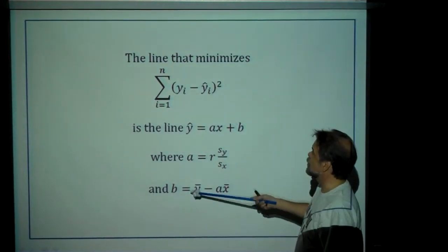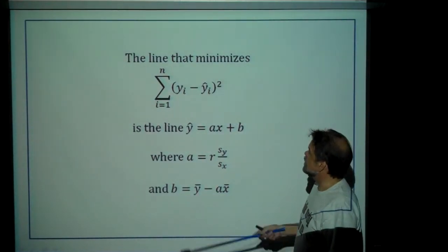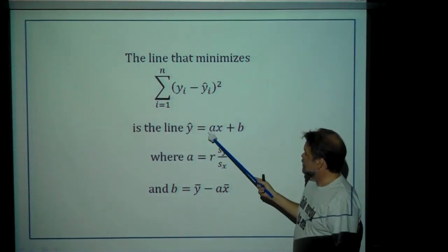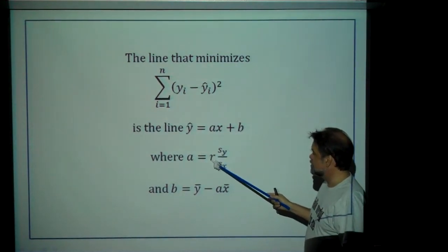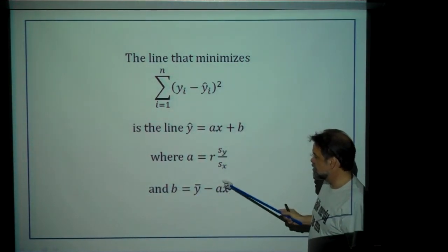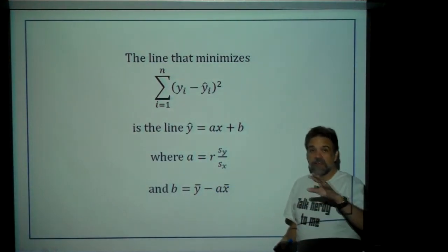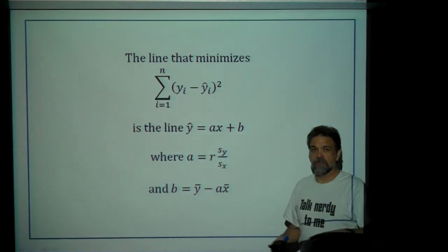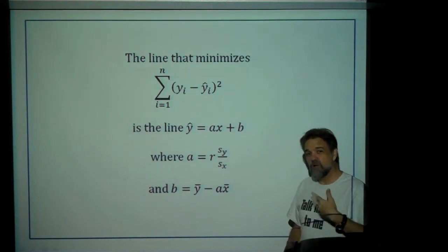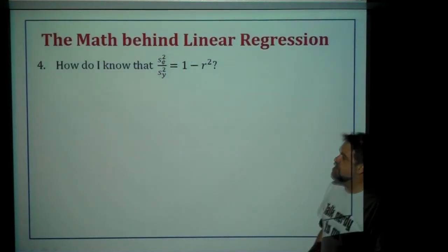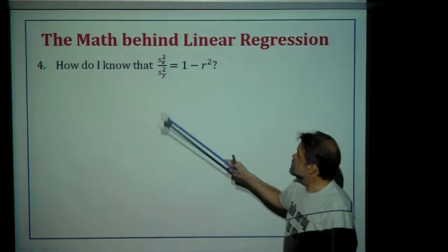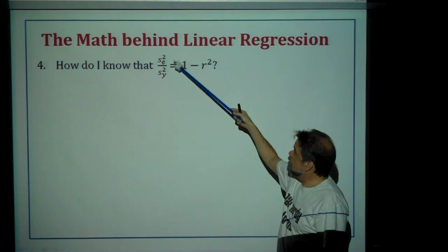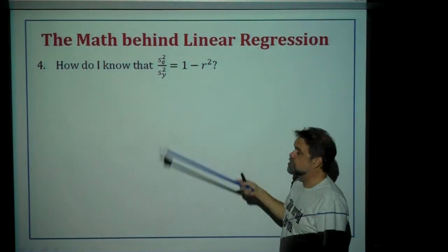So to summarize: the line that minimizes the sum of squared residuals is y-hat equals ax plus b, where a equals r times s-y over s-x, and b equals y-bar minus a times x-bar. That's a really good thing to know, and it's also written on your formula chart for the AP test, so don't worry about memorizing it — know it, but don't memorize it. Two down.